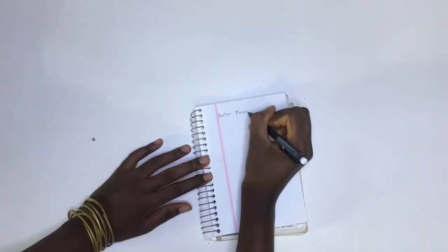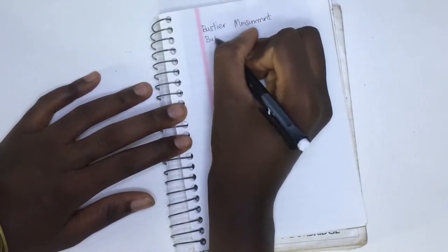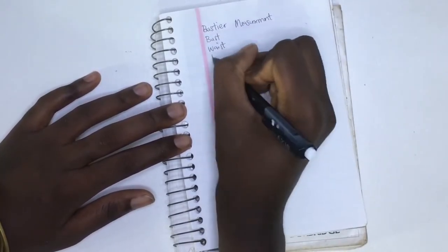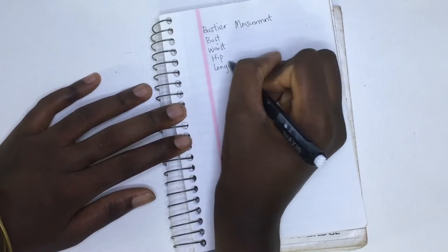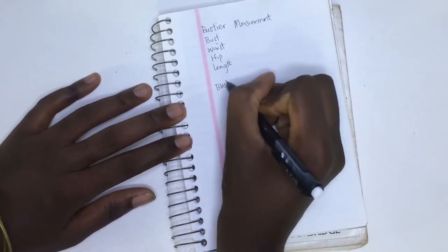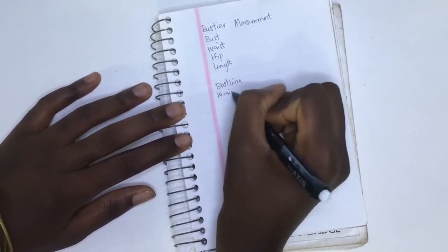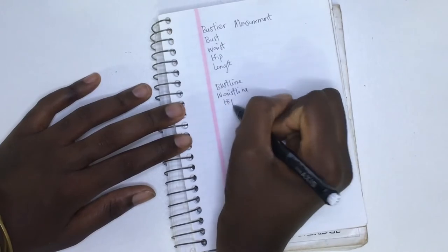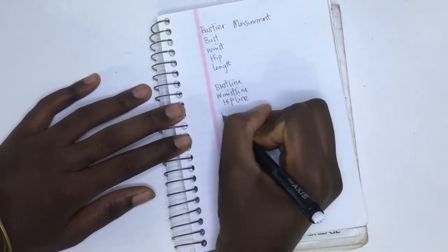The measurements required for this pattern are your bust measurement, waist, hip, and the length of the bustier. And the additional measurements include the bust line, waist line, hip line, and the bust to bust measurement.